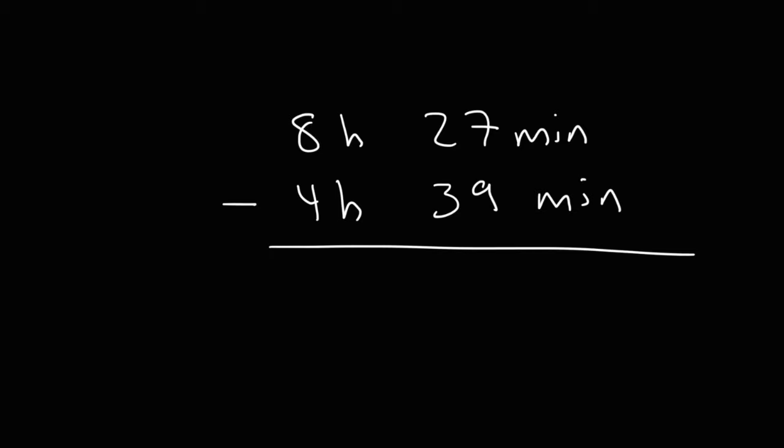Now, let's consider a harder example. So let's say we have 8 hours and 27 minutes. And let's subtract that by 4 hours and 39 minutes. Now, if we subtract 27 by 39, we're going to get a negative number. So because this number is less than this one, we'll need to borrow an hour.